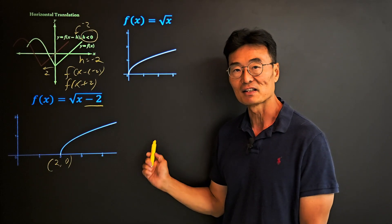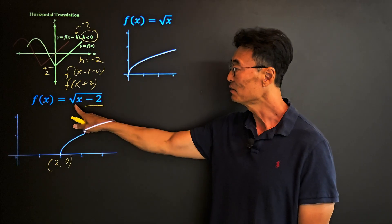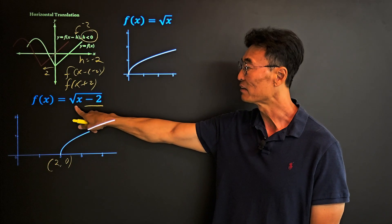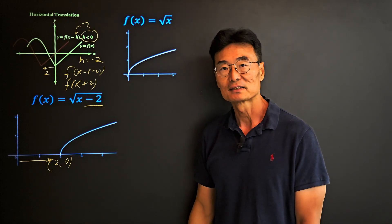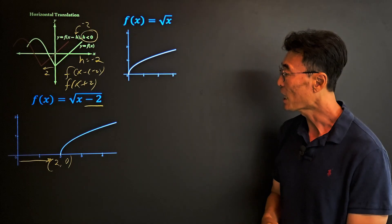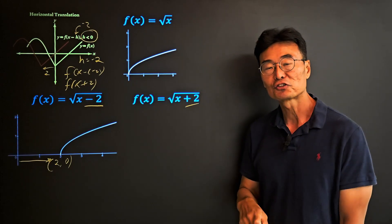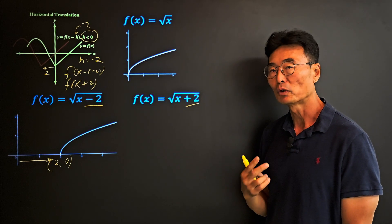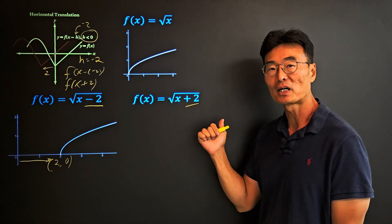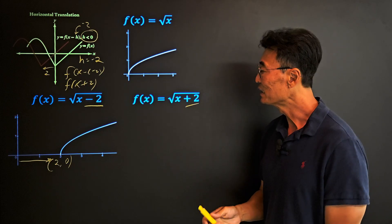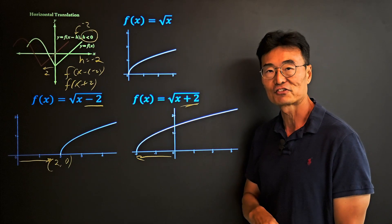I want to emphasize: for horizontal translation, if it's minus you move it to the right — so √(x - 2) moves right two units. The opposite, √(x + 2), goes to the left two units. When it's plus 2, common sense says go right, but no — it goes left.